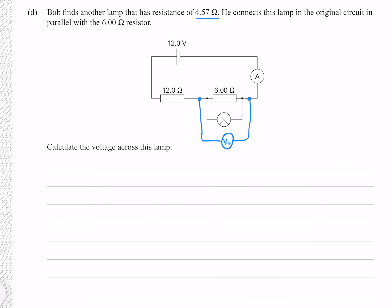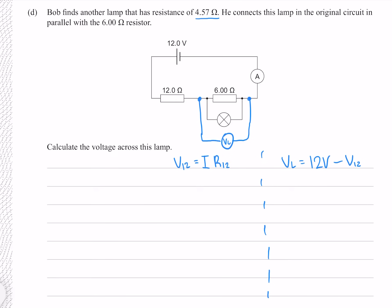Via Kirchhoff's voltage law, this voltage across our lamp is going to be our source voltage of 12 volts, minus the voltage across our 12 ohm resistor, V12. So we need to find V12. The voltage across our 12 ohm resistor is, via Ohm's law, the current in the circuit times our resistance of 12 ohms. The problem is we don't know our current, so we need to find that.